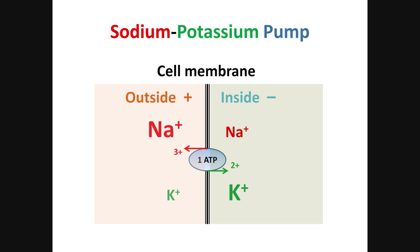Now this stage is set for generating the action potential. All you need to remember is that inside is negative and there is more sodium outside and more potassium inside. In the second part, we will see how the movement of sodium and potassium ions across the membrane changes the transmembrane potential. It goes from negative to positive and back. This fast change, up and down, is what we call action potential. Thank you.